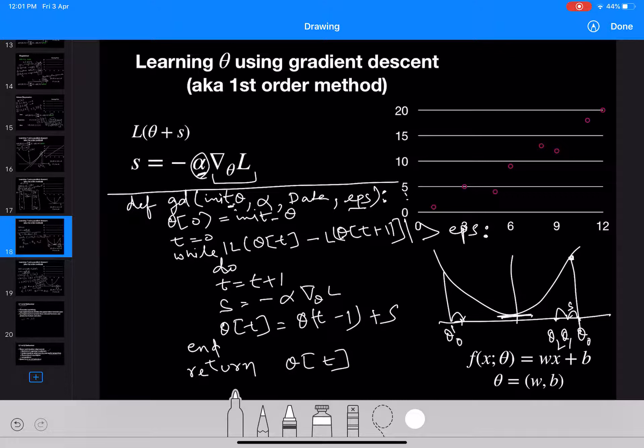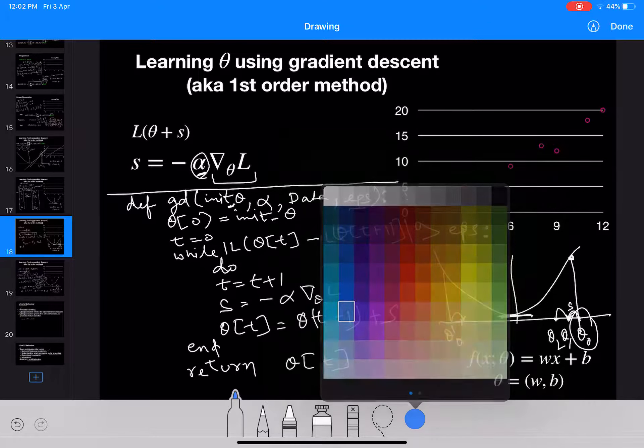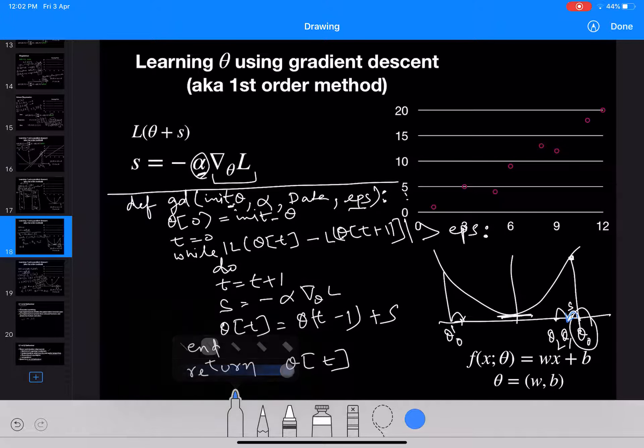So this is our algorithm and what it is trying to do is it will start from theta zero, and then it will take a step and go to theta one. Then it will take a step again to theta two, and it will keep doing it till it converges